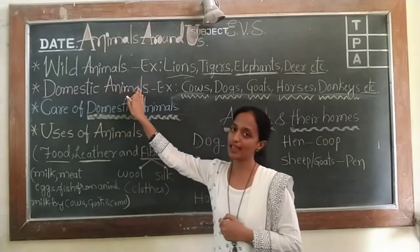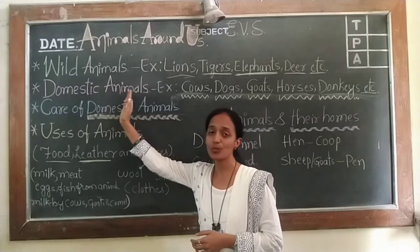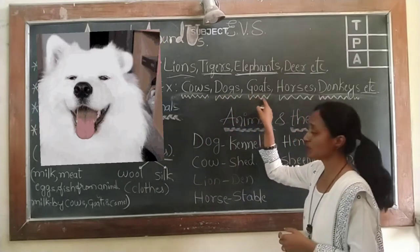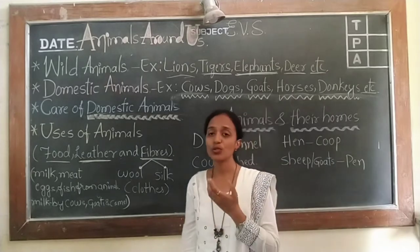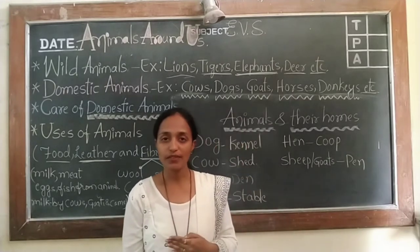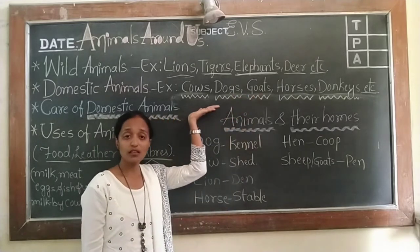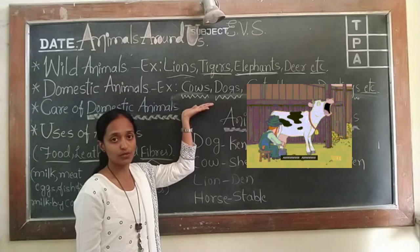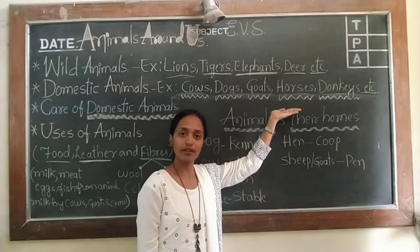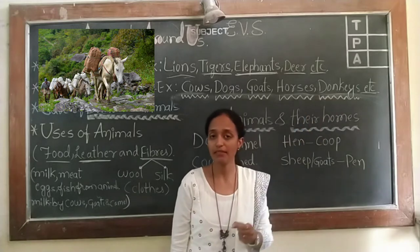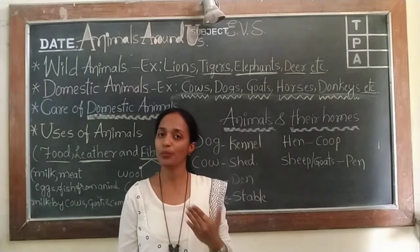Let us know about domestic animals. Domestic animals are useful to us in many ways. They give us food and clothes. We get milk from cows and buffaloes. Dogs guard our house. Horses are used for riding. Donkeys help us in travelling and are used to carry loads from one place to another.